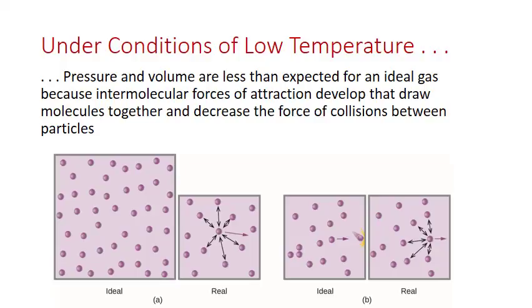The second condition is that of low temperature. At low temperature, pressure and volume are less than expected for an ideal gas because intramolecular forces of attraction develop that draw molecules together and decrease the force of collisions between particles. So at low temperature, the average kinetic energy of the particles is decreased. The particles aren't moving as much relative to each other and they're able to actually develop intermolecular attractions between them.